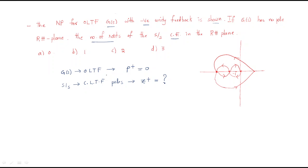Looking at the Nyquist plot, we examine the point minus 1 + j0. We count how many encirclements of this point occur. There is one encirclement in the anti-clockwise direction, which counts as minus one, and one encirclement in the clockwise direction, which counts as plus one. So the net encirclements N equals zero.